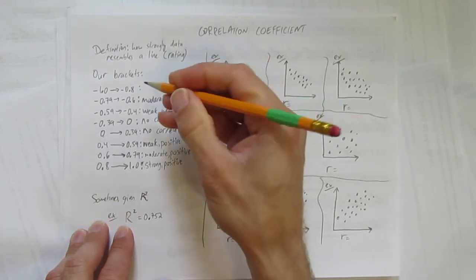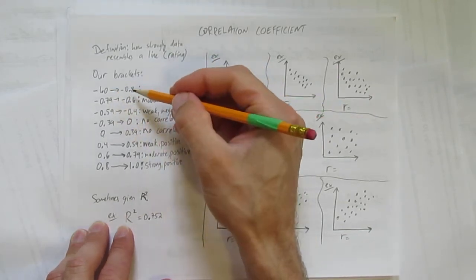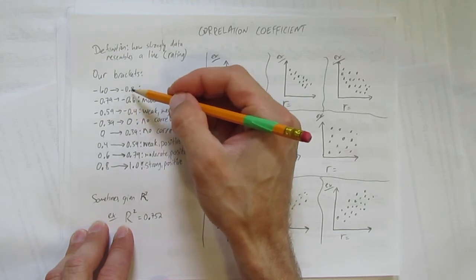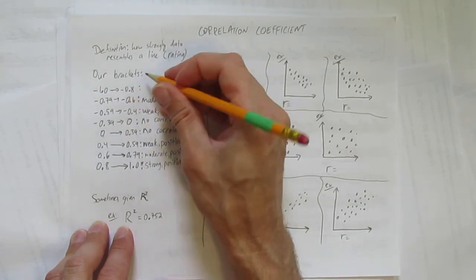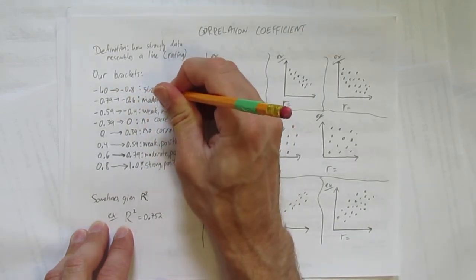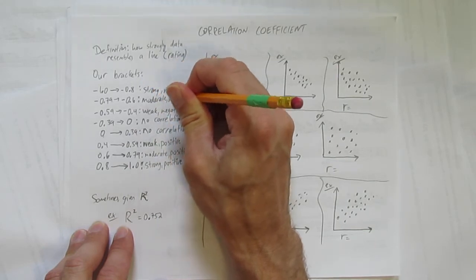And finally if you're between 100% to 80% negative or negative 1.0 to negative 0.8, we'll call that strong negative correlation.